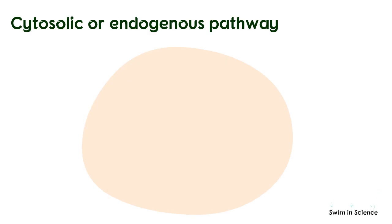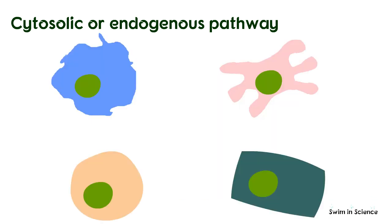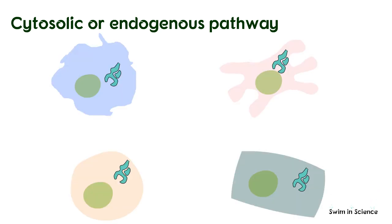Cytosolic or endogenous pathway processes and presents the endogenous or intracellular protein antigens associated with class 1 MHC molecules. Since all nucleated cells express class 1 MHC molecules, any nucleated cell can serve as a target cell, presenting endogenous antigens.